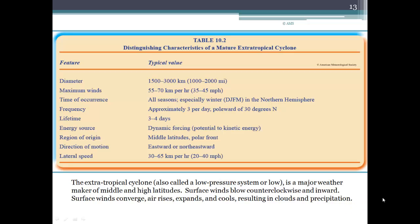To continue with Chapter 10, let's talk now about extra-tropical cyclones. These are cyclonic storms, low-pressure systems that form over the mid-latitudes. And in Table 10.2, you see some of the distinguishing characteristics of a mature extra-tropical cyclone.